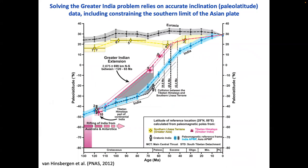Now we're finally ready to address Greater India. The reason I've gone through all this is because it depends on paleolatitude, which has many problems. It's a double problem: we need to know the southern limit of Eurasia, and the path of India. When these come together, that's how we date the collision age. Anyone claiming to know the collision age to better than 5 million years precision — there's no way we have that kind of precision. We know India's trajectory and roughly where Greater India was, but how can we determine how far Greater India extended?